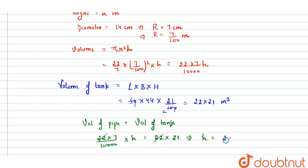22 to 22 cancel out, which implies H equals 21 divided by 7 into 10,000, which equals 30,000 meter.